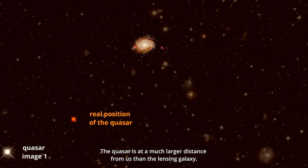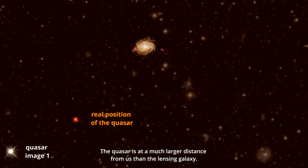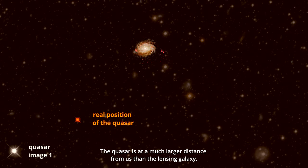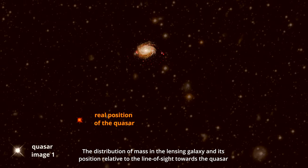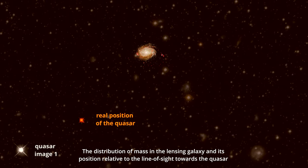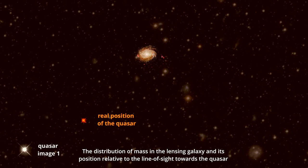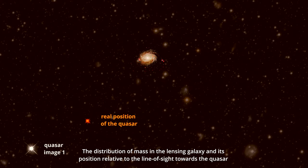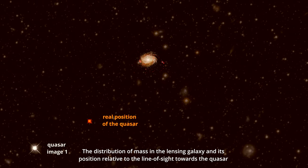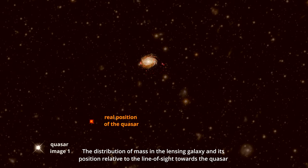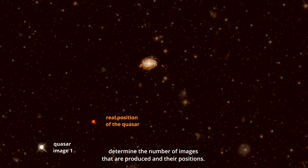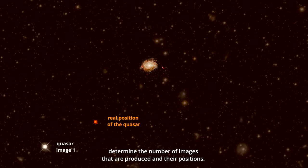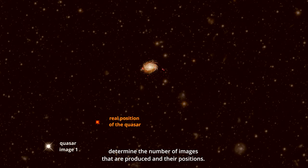The quasar is at a much larger distance from us than the lensing galaxy. The distribution of mass in the lensing galaxy and its position relative to the line of sight towards the quasar determine the number of images that are produced and their positions.